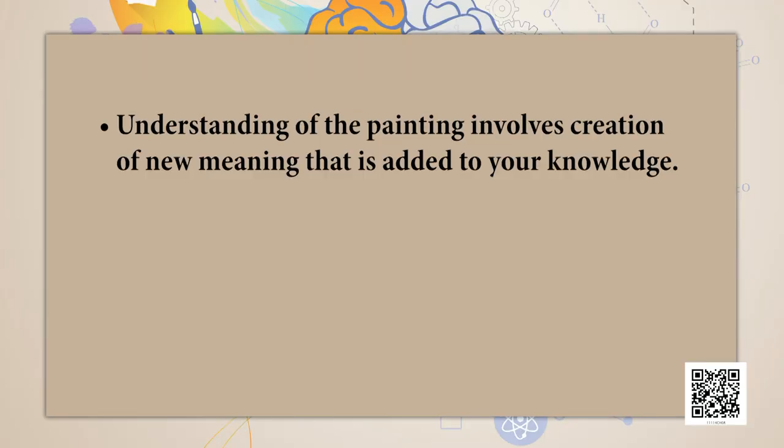Understanding of the painting involves creation of new meaning that is added to your knowledge. Thinking, therefore, is a higher mental process through which we manipulate and analyse the acquired or existing information. Such manipulation and analysis occur by means of abstracting, reasoning, imagining, problem-solving, judging and decision-making. One of the key characteristics is that thinking is mostly organised and goal directed.